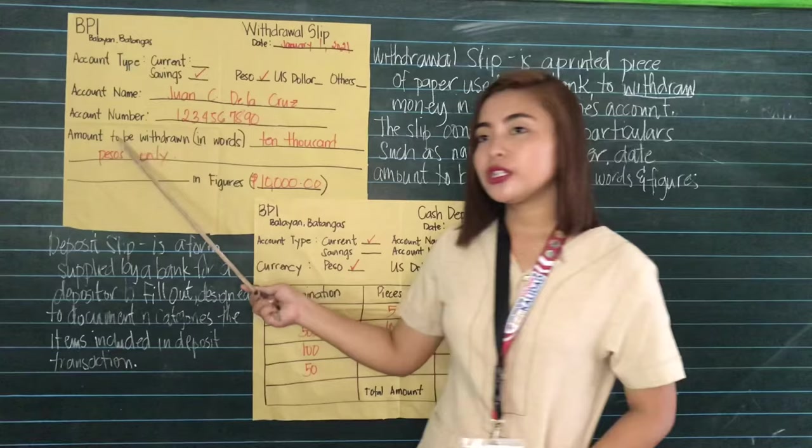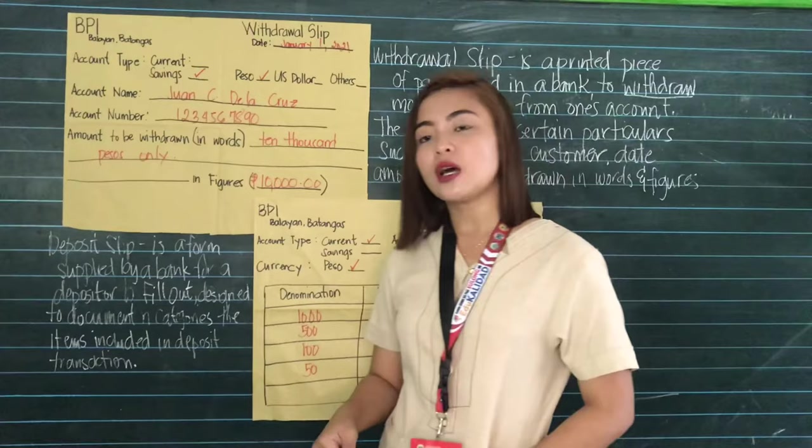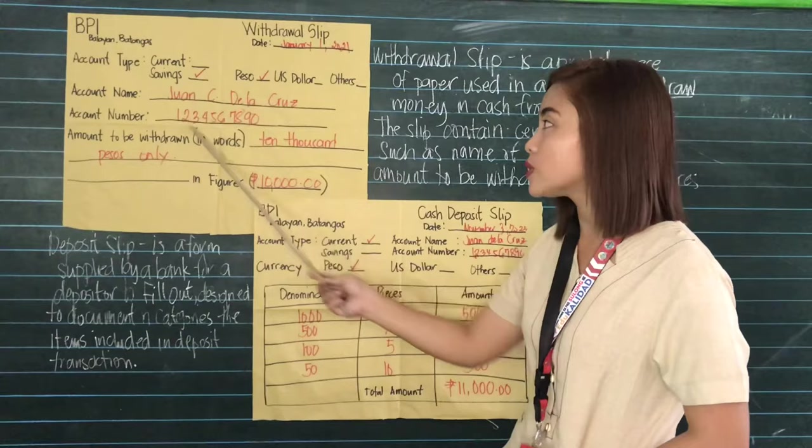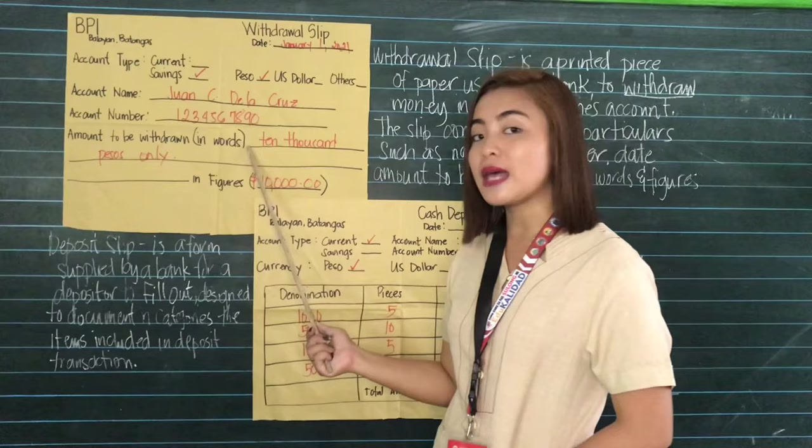So that would be Juan C. De La Cruz. The account number is usually a 10-digit number that is assigned to that particular account. The account number in Juan C. De La Cruz's savings account is 123-456-7890.